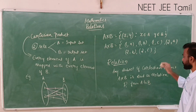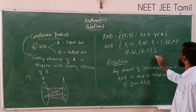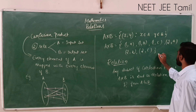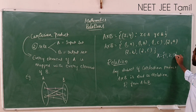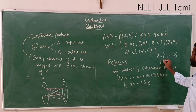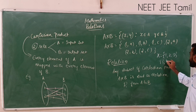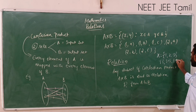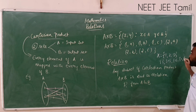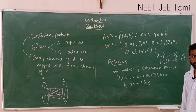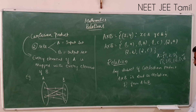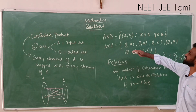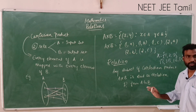We know what a subset is. For example, if we take a set X equal to {1, 2, 3}, the possible subsets include {1,2,3}, {1,2}, {1,3}, and so on. We already learnt this in class 11 and high school. So similarly, any subset of a Cartesian product is called a relation.